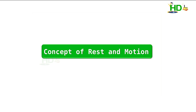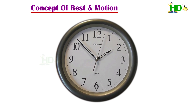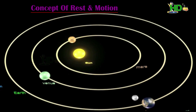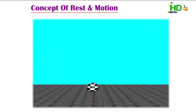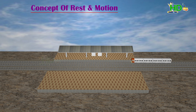Concept of Rest and Motion. In daily life, we come across so many objects. Some we say are at rest, some of them are in motion. Suppose we consider a ball on the ground — we say it is at rest. A moving train, we say it is in motion.